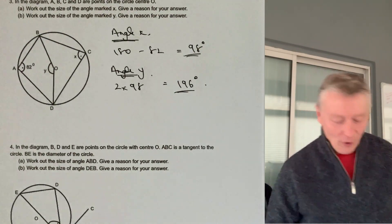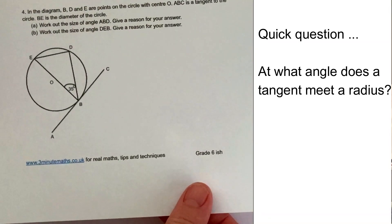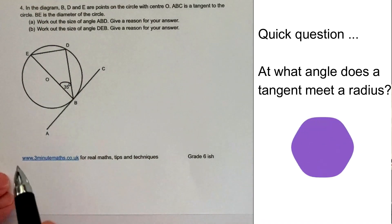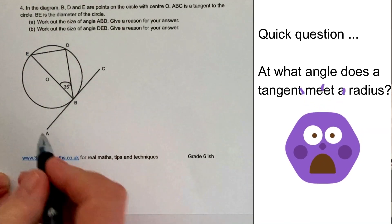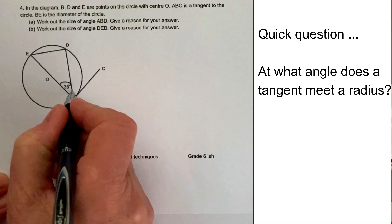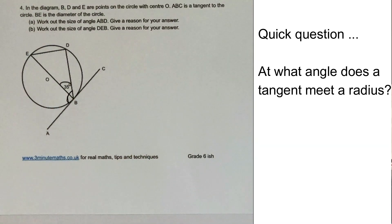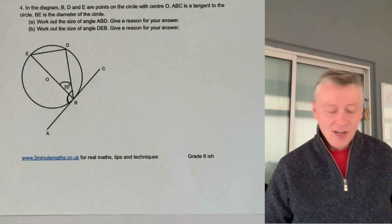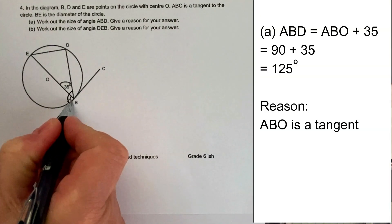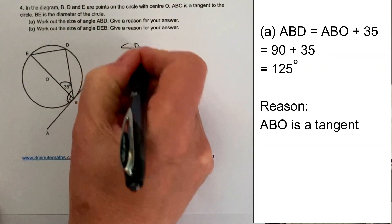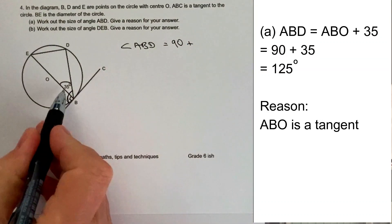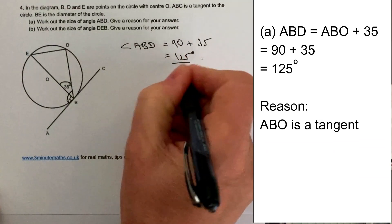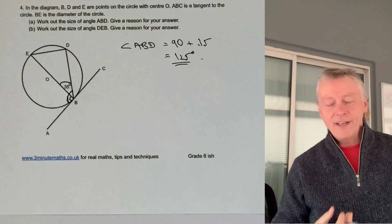In question four we've got a triangle inside a circle with a tangent attached to it. We're asked firstly to work out angle ABD. From question one, we know the tangent meets a radius at 90 degrees, so part of this angle is 90 degrees. Therefore angle ABD equals 90 plus 35, which gives a total angle of 125 degrees — that's the answer to part A.